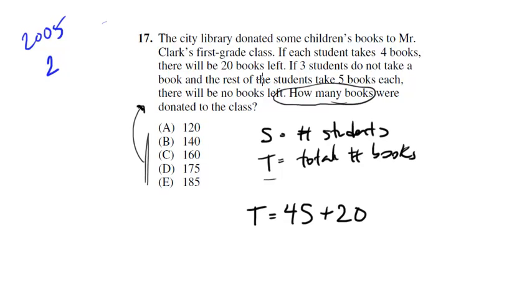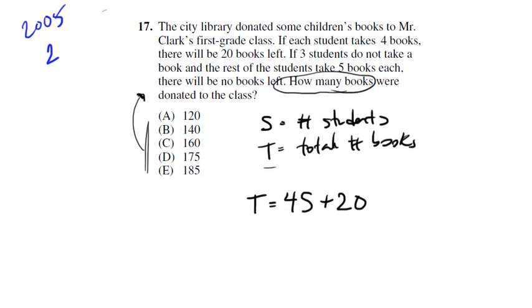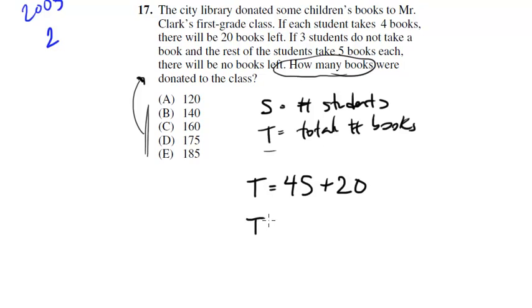If three students do not take a book, and the rest of the students take five books each, there will be no books left. Okay, so in this case, the total number of books is going to equal, well what? Well we know each student, except for three, are taking five. So this could be five times something. But what are we going to do for the next part? Well notice it's three less students, so it's going to be s minus three, because we don't want to do five s, because five s would be if every student took it. We want to do five times s minus three, because it's three fewer students than there are in the class that are taking books. And we know that this is going to leave none left over, so we don't have to add any plus 20 like we did in the first problem. So now we have two equations, two unknowns, so we can go ahead and solve this.